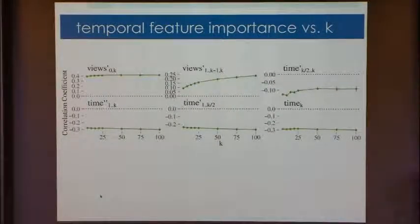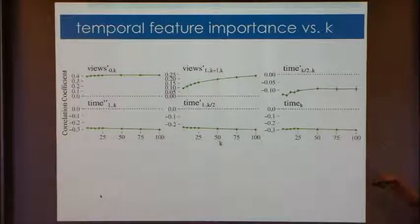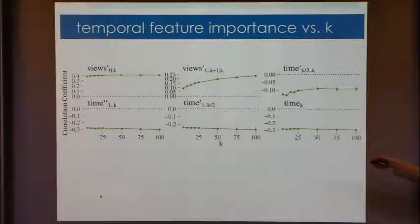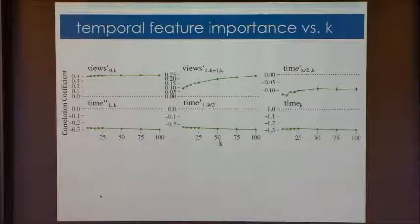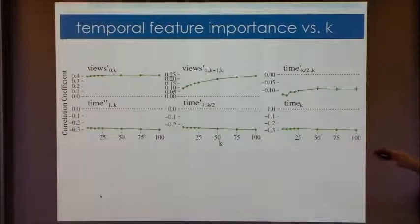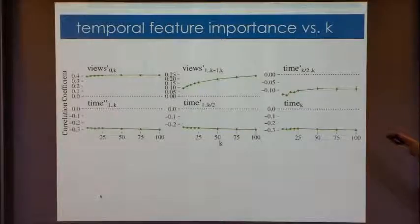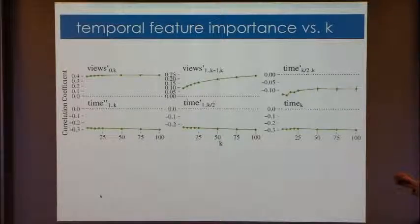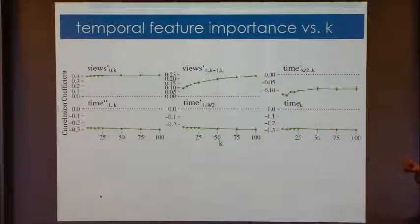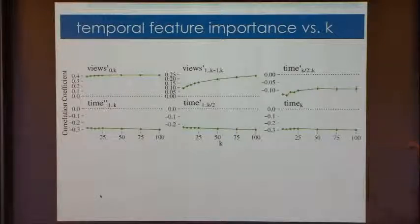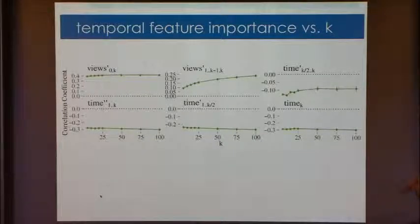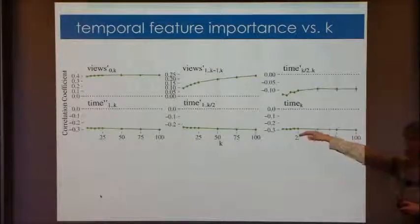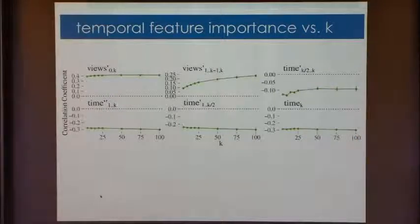And finally, these are the winning features that tend to dominate the others, are how many views you're getting per unit time of either the origin or just of the reshares. How much time do you have to wait until the next reshare? Is the time actually increasing? So there's an acceleration measure, which is negatively correlated, meaning if it takes more and more time, the cascade's dying down. So it's not going to grow as large. So all of these features tend to do well, and they actually continue to be highly relevant as you're observing the cascade.